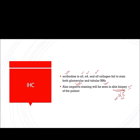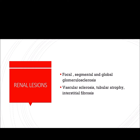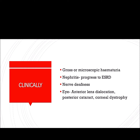The renal lesions will present with hematuria, then progressively focal segmental and later global glomerulosclerosis. There can also be vascular sclerosis around blood vessels, leading to renovascular hypertension, then tubular atrophy, and later interstitial fibrosis. Because of this vascular sclerosis, ACE inhibitors are also used in the treatment of Alport syndrome. Clinically, there will be gross or microscopic hematuria, nephritis progressing to end-stage renal disease, sensorineural hearing loss, and in the eye: anterior lens dislocation, posterior cataract, and corneal dystrophy.